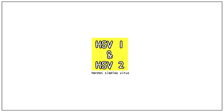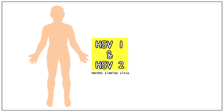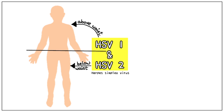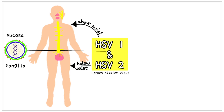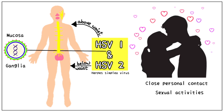Let's go back to HHV1 and 2. HHV1 and 2 have a preference for different parts of our bodies. HHV1 causes infection above the waist, while HHV2 causes infection below the waist. The virus reservoir in our bodies is usually in the mucosa and in the ganglia. Herpes infection spreads through close personal contact and sexual activities and is very easily transmitted.